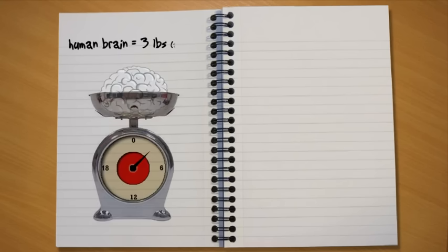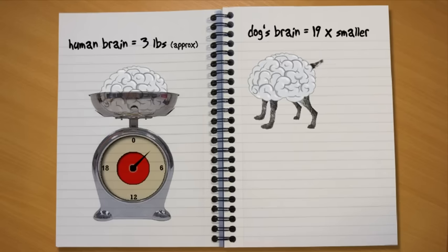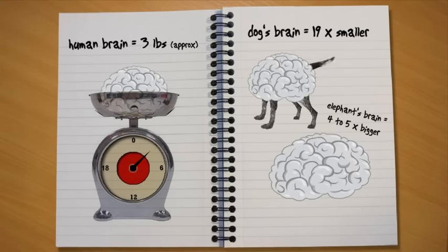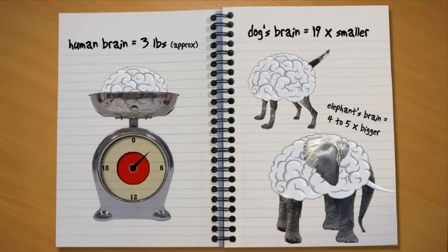Here are some things that we know about the brain. The average human brain weighs about 3 pounds and looks like a big, grey, wrinkly sponge. A dog's brain is 19 times smaller than a human adult brain, while an elephant's brain is four to five times bigger than ours.